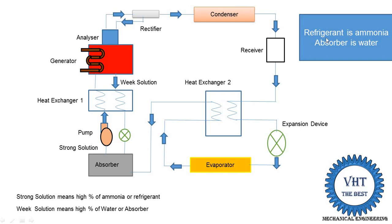In this system, ammonia is used as the refrigerant and water is used as the absorber. Ammonia is circulated in the right-side part of the system — that is, the condenser, receiver, expansion device, and evaporator. In the left-side components — absorber, heat exchanger 1, analyzer, and generator — a mixture of solution is circulated. The right-side portion contains only the refrigerant ammonia, so in the condenser only vapor refrigerant is supplied. The vapor refrigerant rejects heat in the condenser and is converted into liquid ammonia, then supplied to the receiver.